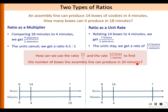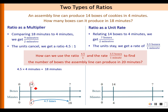Now let's use the ratio of 4.5 or the rate of 3.5 boxes per minute to solve our story problem. The 4.5 means there are 4.5 times of 4 minutes in 18 minutes. Since the production rate is the same — every 4 minutes it produces 14 boxes — if we have 4.5 groups of this in 18 minutes, then we multiply 4.5 times 14 boxes to get our answer of 63 boxes.